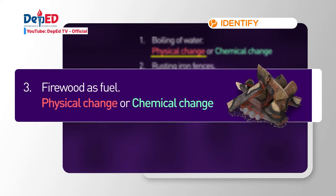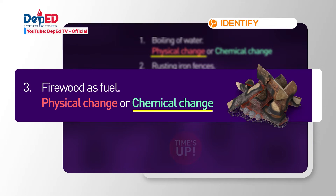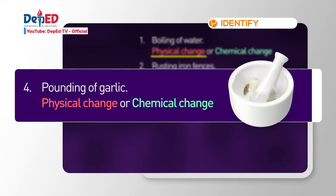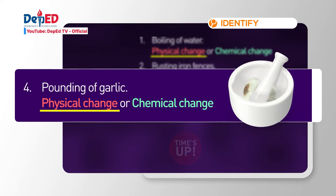Let's look at the next one. Firewood as a fuel. The answer: chemical change. Firewood when burned is changed into a new substance, forming charcoal. Here's another one. Pounding of garlic. If you answered physical change, correct. Although the garlic may change its size and shape, it doesn't lose its identity. It's still a garlic.